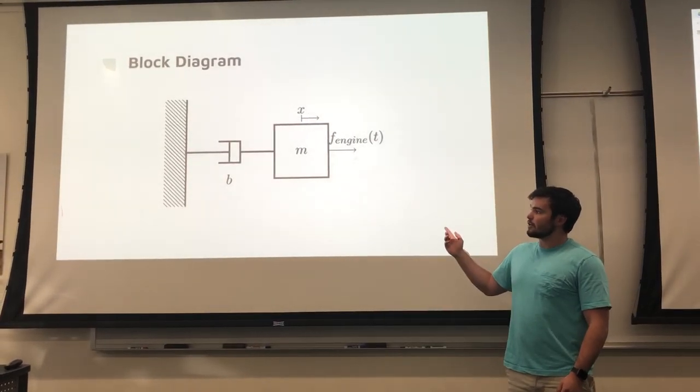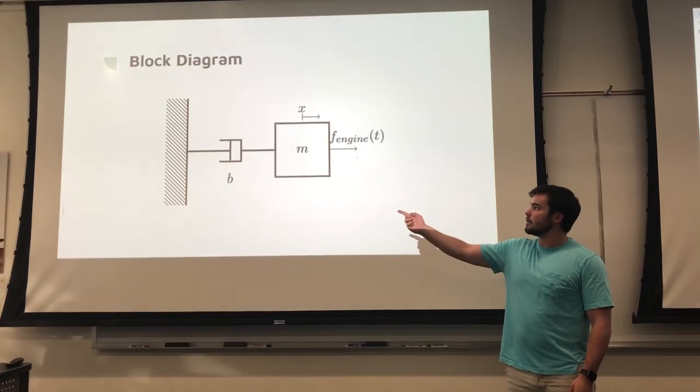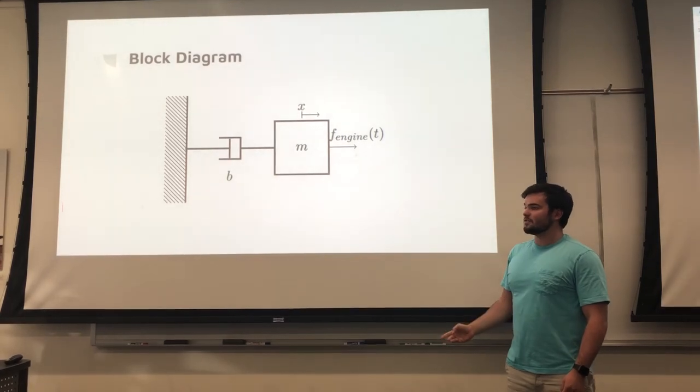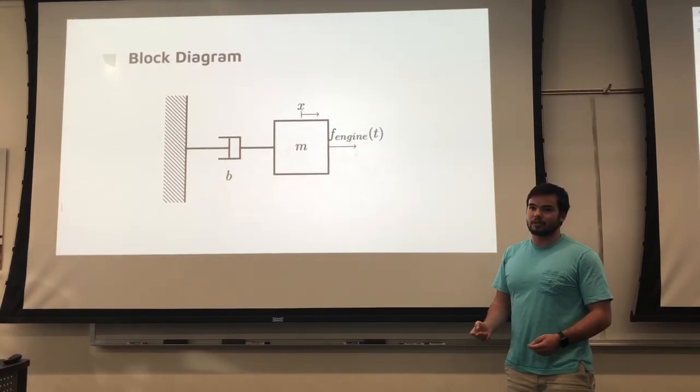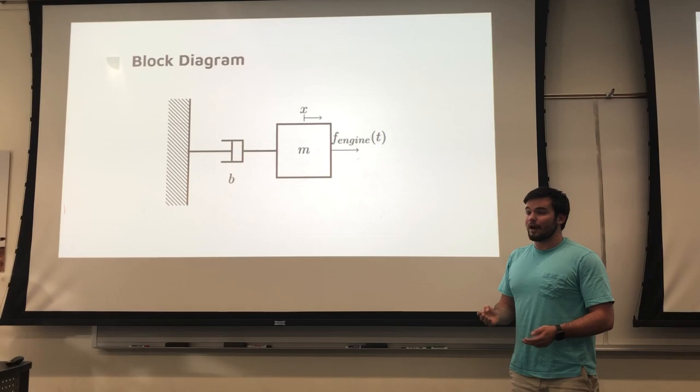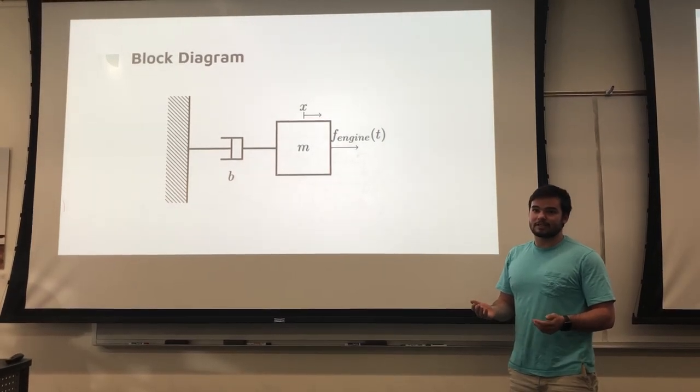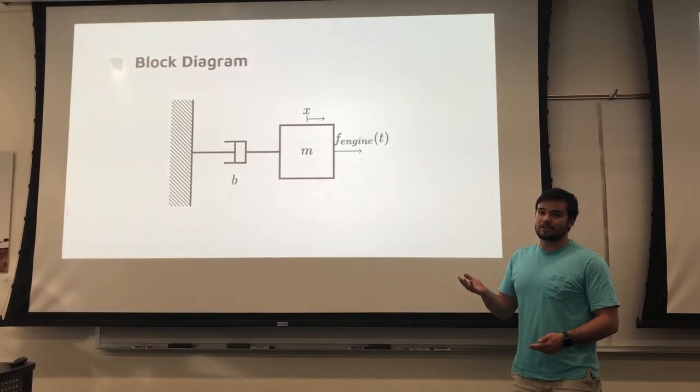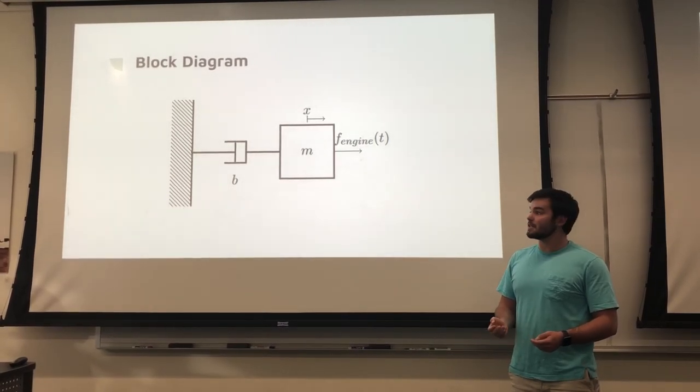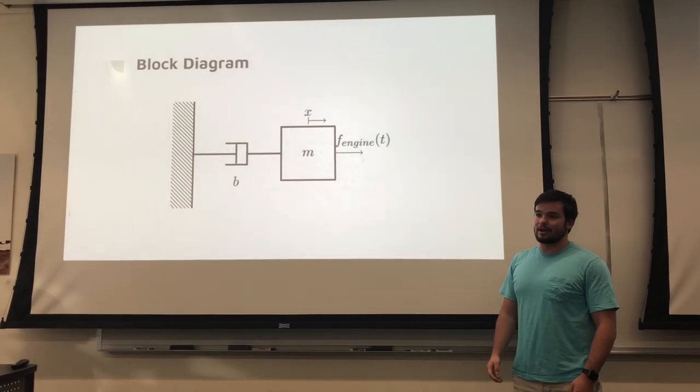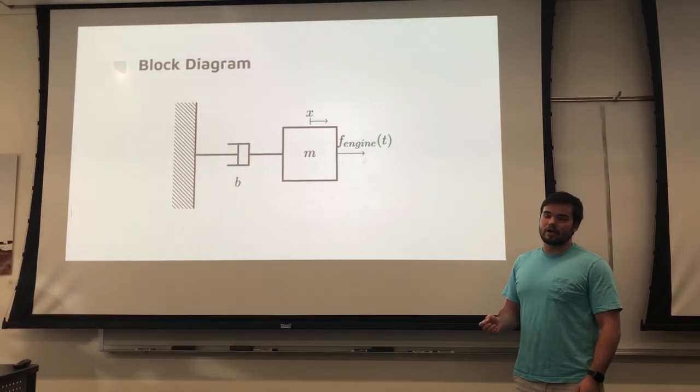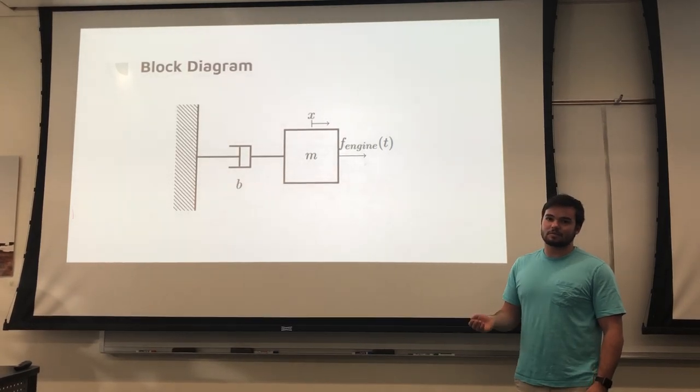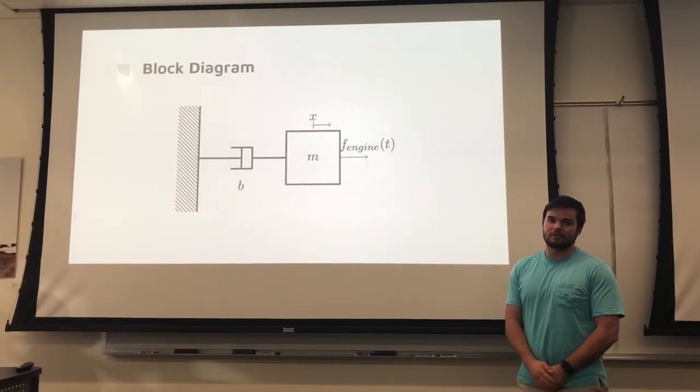Here's our block diagram showing the damper, mass, and force of the engine. Our specifications for this controller are: rise time accurate for car acceleration, overshoot not going too far above desired speed to stay under the speed limit, and steady-state error minimal so the car stays around the desired speed.